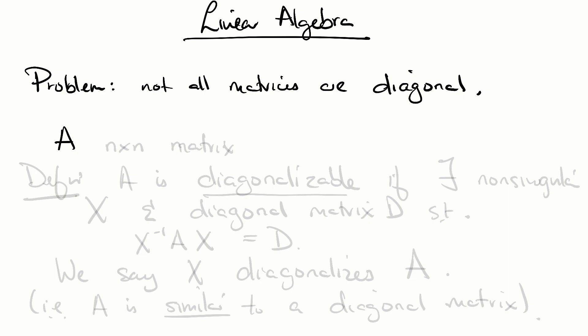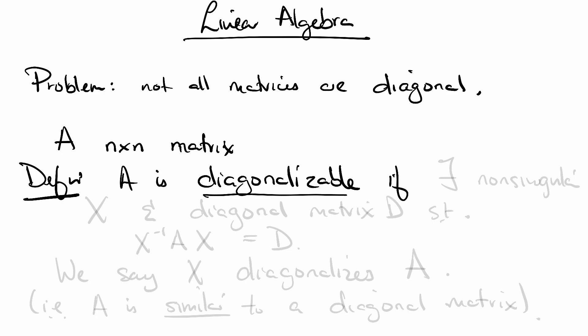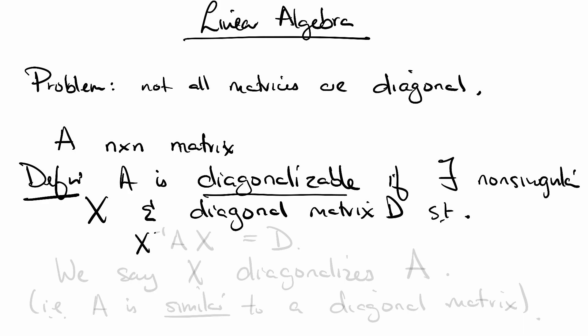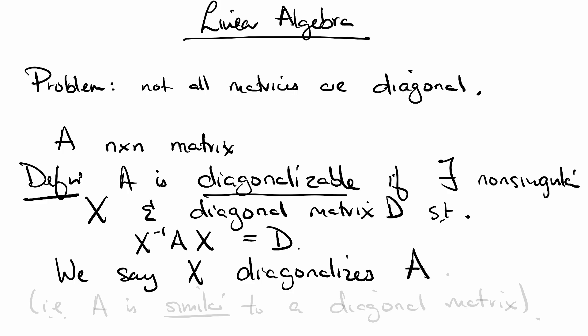So let's have a definition. A is some n-by-n matrix as per usual. Definition: A is diagonalizable if there exists a non-singular matrix X and a diagonal matrix D, such that X inverse A X is equal to D. In this case we say that X diagonalizes A. There exists a non-singular matrix so that when we multiply on one side with X inverse and on the other side with X, then we get a diagonal matrix.